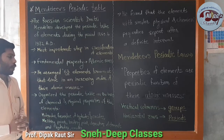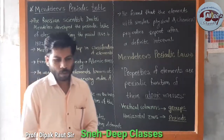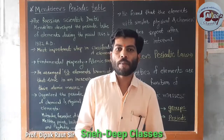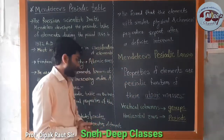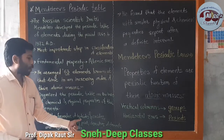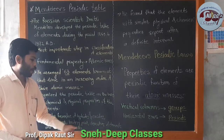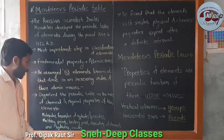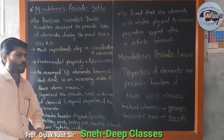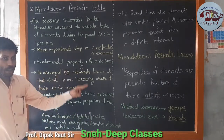Then he organized the periodic table on the basis of chemical and physical properties of the elements. These 63 elements were arranged in the table by the basis of physical and chemical properties: molecular formula of the hydrides and oxides, melting point, boiling point, and density of elements and density of hydrides and oxides.